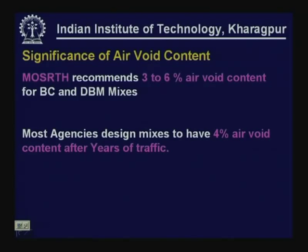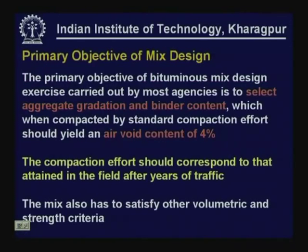On the other hand, excessively high air void content allows free circulation of air within the voids, causing oxidation of bitumen — making it stiffer, reducing flexibility, and increasing the likelihood of cracking. It also permits free circulation of water, which can damage bitumen layers and cause stripping and raveling. The Ministry of Shipping and Road Transport recommends 3–6% air void content for BC and DBM mixes, but most agencies design mixes to have 4% air void content after years of traffic.